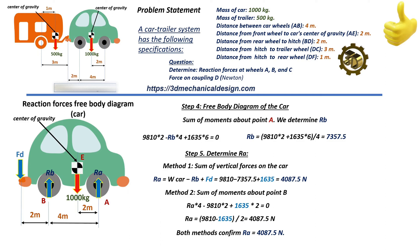The analysis of the car trailer system yields the following results. Reaction forces at point A, front wheel of car: RA equals 4,087.5 newtons. At point B, rear wheel of car: RB equals 7,357.5 newtons. At point C, trailer wheel: RC equals 3,270 newtons. Force on hitch: FD equals 1,635 newtons.